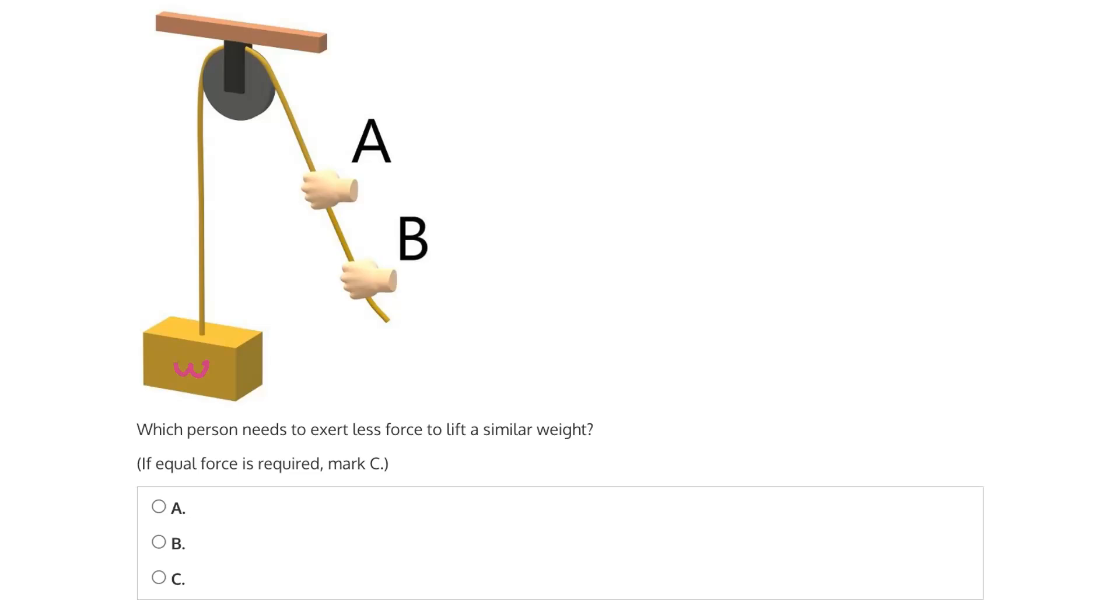So we have this load, which has some weight W, and is applying a downward force. And this downward force is balanced by tension in the rope.